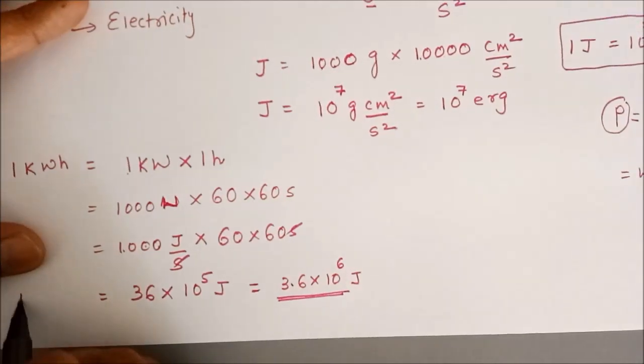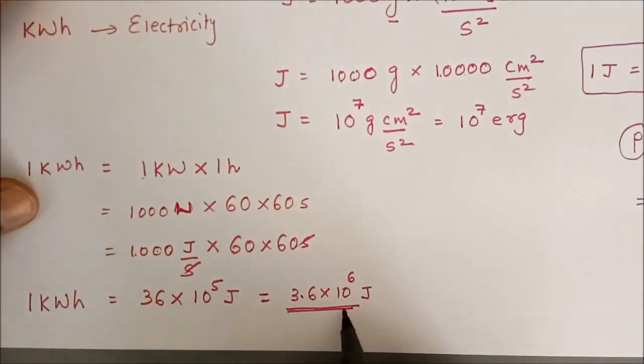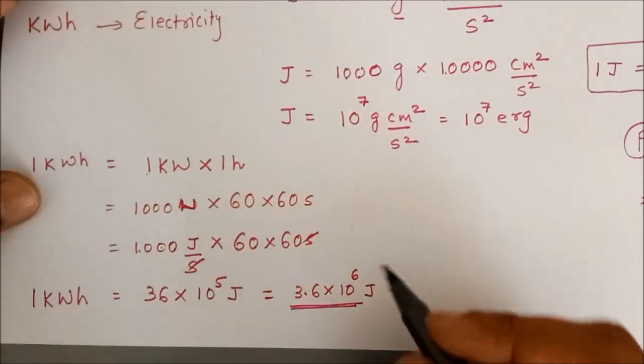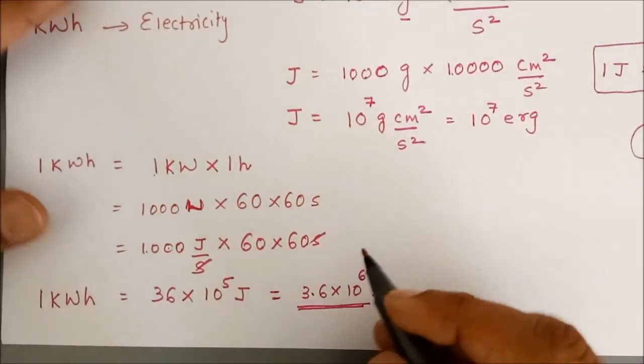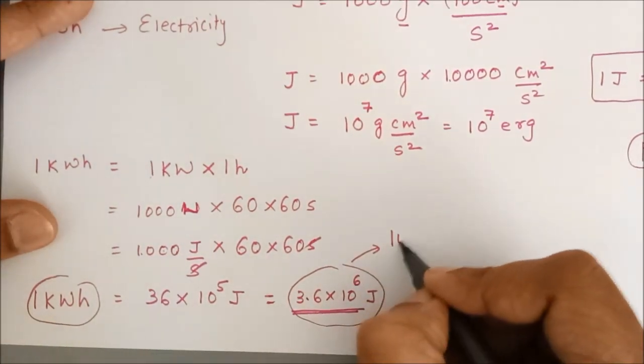So, here 1 kilowatt hour is equal to 3.6 into 10 raised to 6 Joule, this 1 kilowatt hour is said to be or 1 kilowatt hour or this is said to be 1 unit.